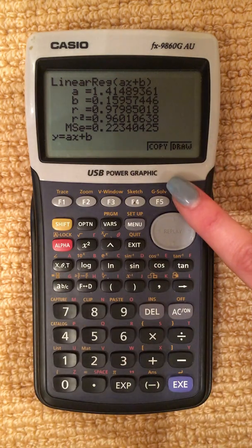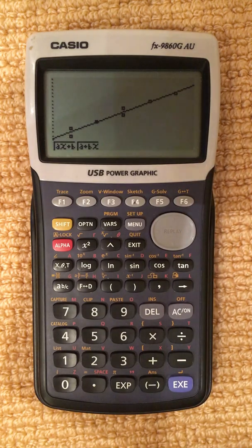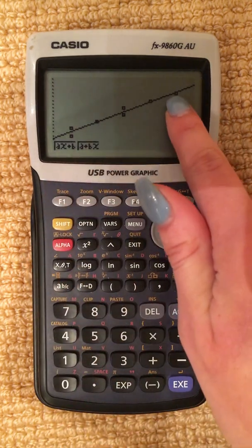So press F6. And there we go. There is our line of best fit, all our dotted values.